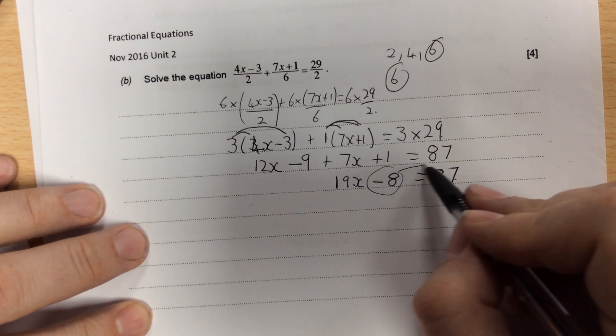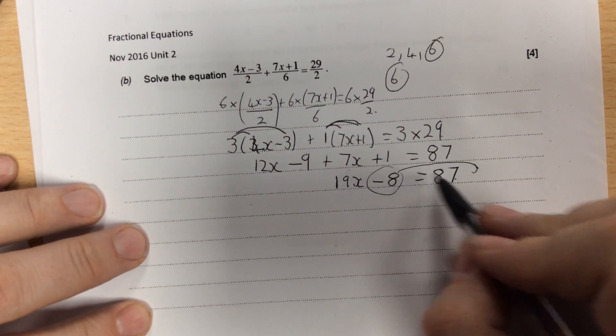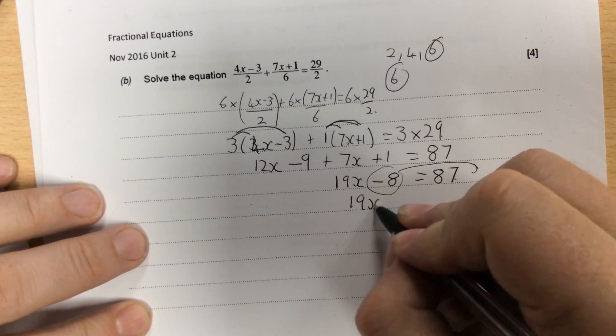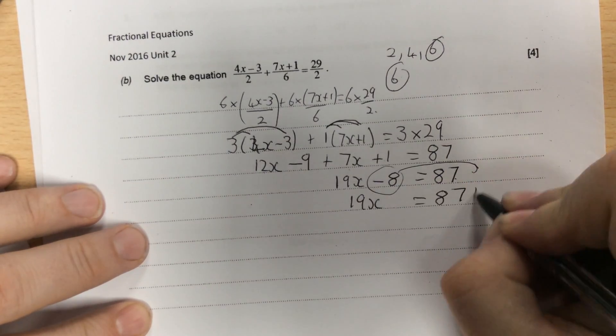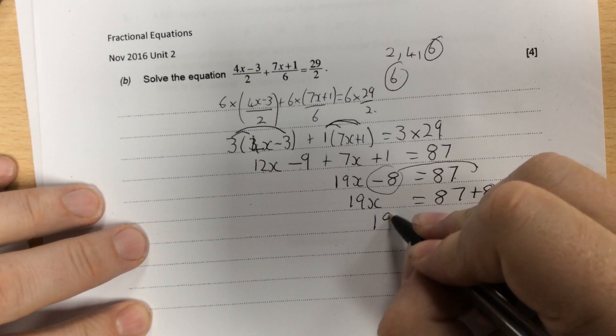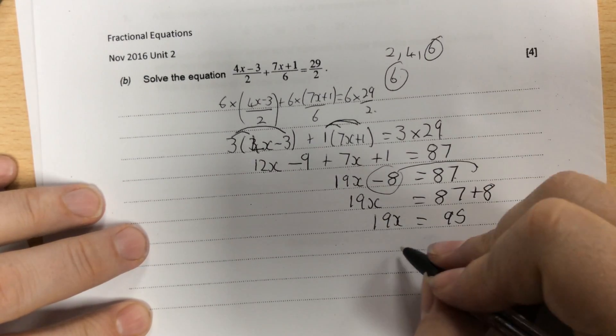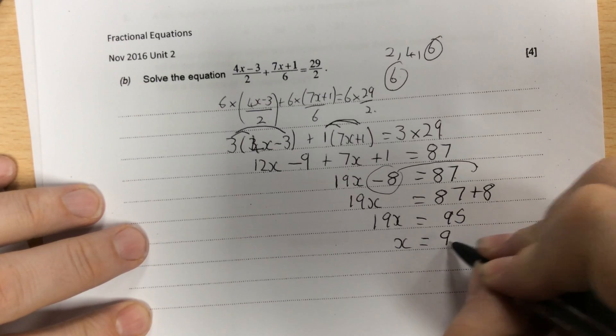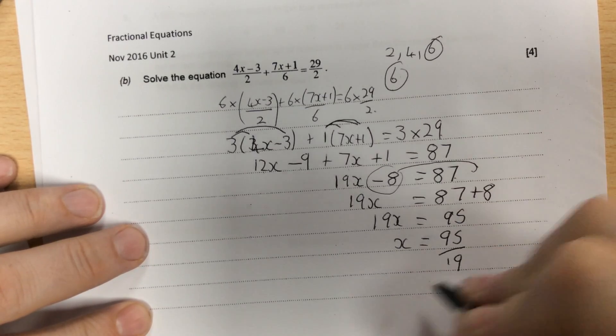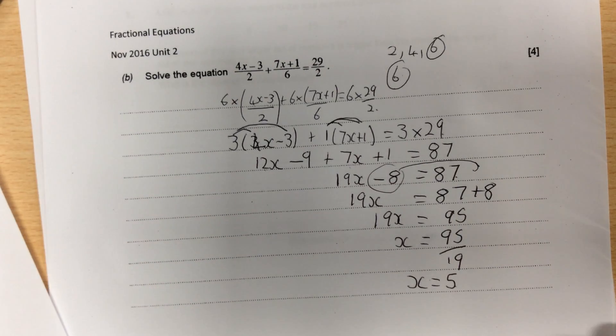To solve an equation now, you want all the x's on one side, all the numbers on the other. So the takeaway 8 goes over and becomes plus 8. So 19x is equal to 95, and then because that means 19 times x, the opposite of times 19 is divided by 19. So x is 95 over 19, which is 5.